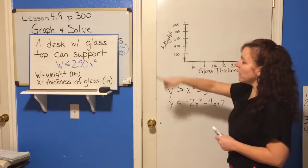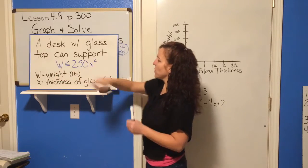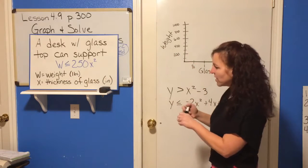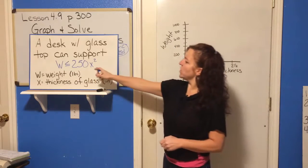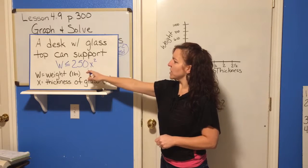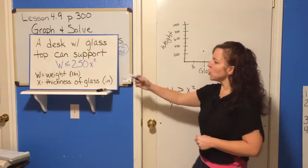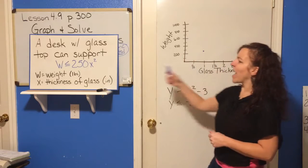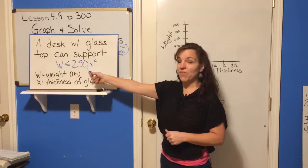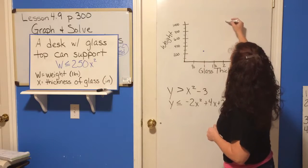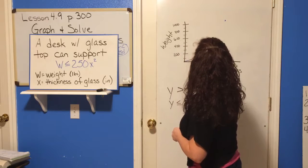We start at (0, 0). If x = 1, then 1 squared times 250 = 250, so there's a point at (1, 250). If x = 2, then 2 squared is 4 and 4 times 250 is 1000, so we have a point at (2, 1000). Since the inequality says less than or equal to, the parabola is drawn as a solid line.